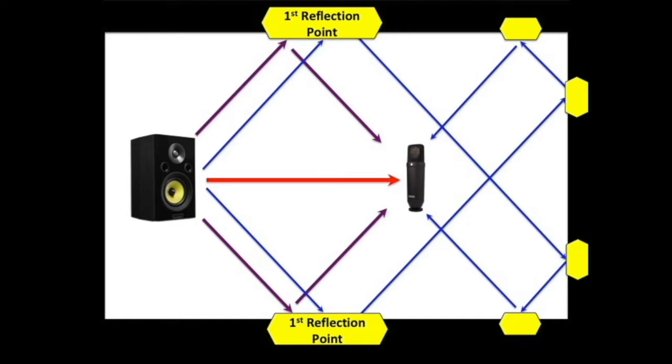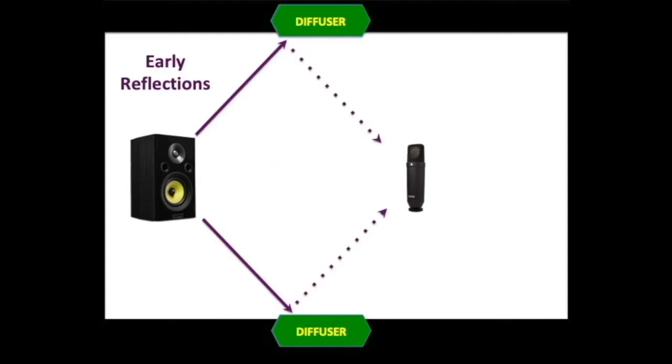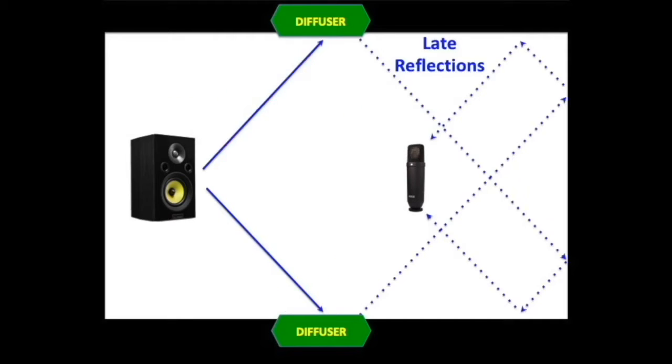So these are the places where you would want to install acoustic treatment, right? It makes sense. In this video, we'll focus on the first reflection points. Here's the diagram showing diffusers installed at the first reflection points. Direct sound not affected. As you can see, early reflections get dispersed. As well as late reflections.